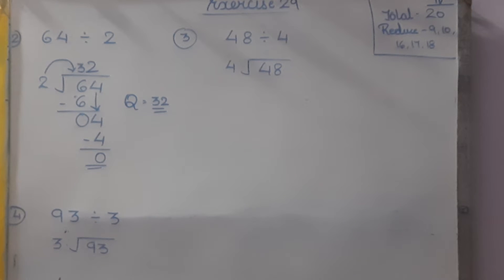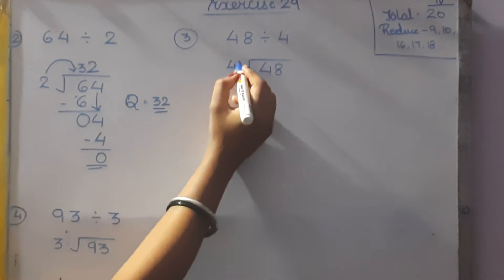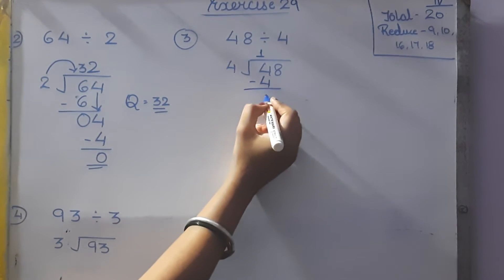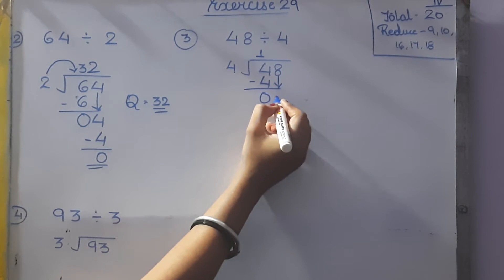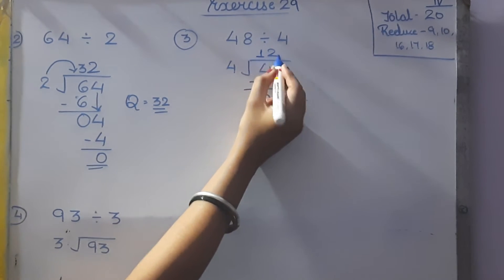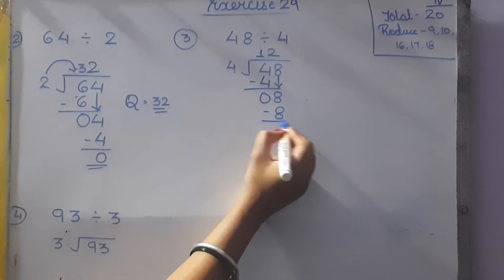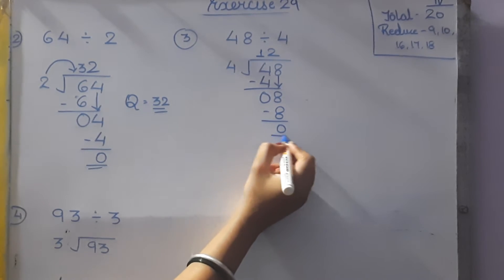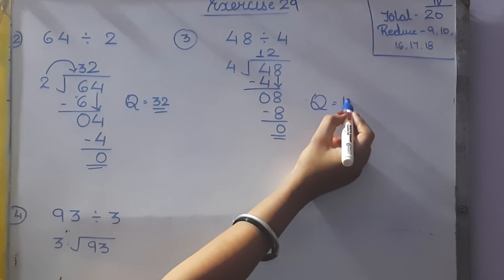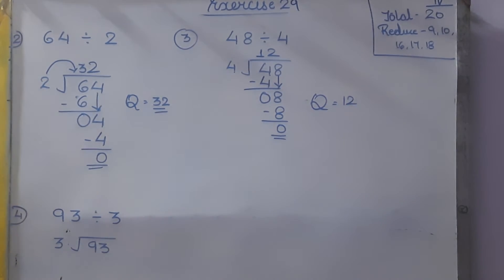Next, third one: 48 divided by 4. The first number — 4 ones are 4, so 4 minus 4 is 0. Bring down 8. 4 twos are 8, so 8 minus 8 is 0. The quotient is 12. You know that 4 times 12 is 48.